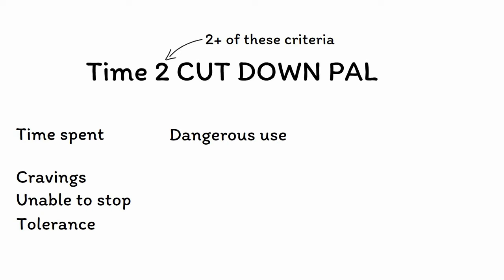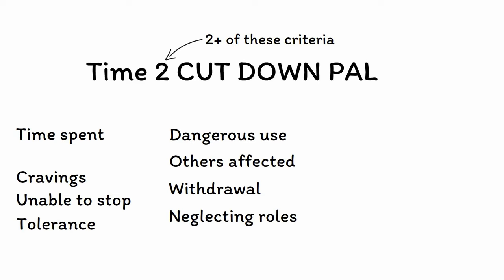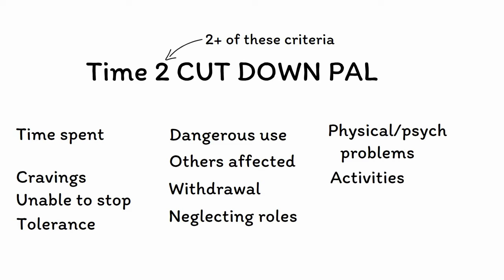Further criteria include: experiencing tolerance so they need more and more to get the same effect; having dangerous results of use; affecting other people through interpersonal and social problems; experiencing withdrawal when they stop; neglecting major roles and responsibilities such as work or family; having physical or psychological problems created or worsened by substance use; giving up activities like socializing or hobbies due to excessive use; and having used larger amounts or for longer than initially wanted.